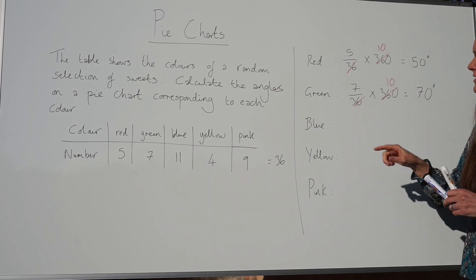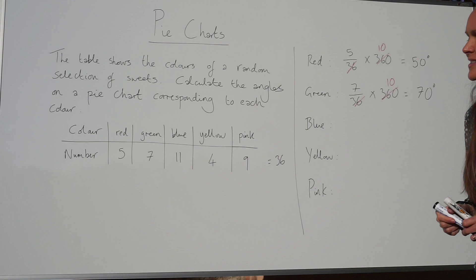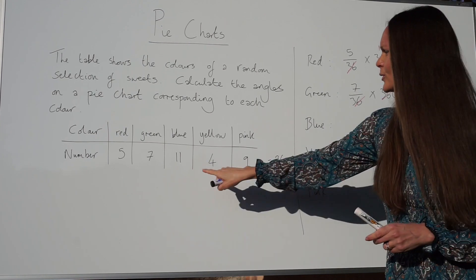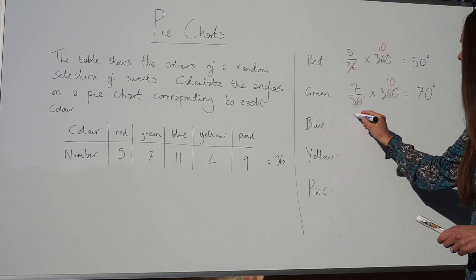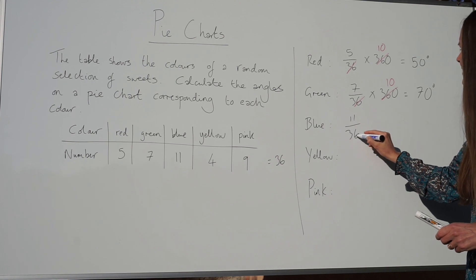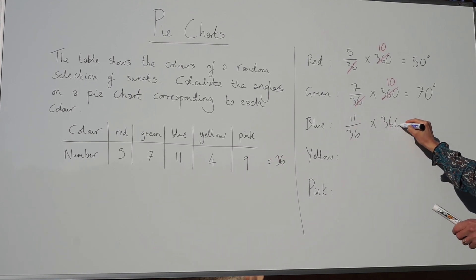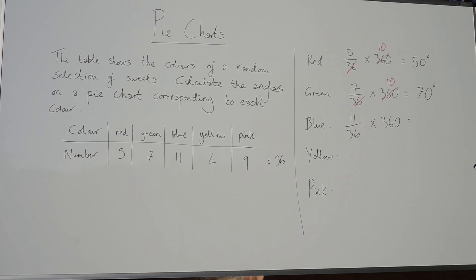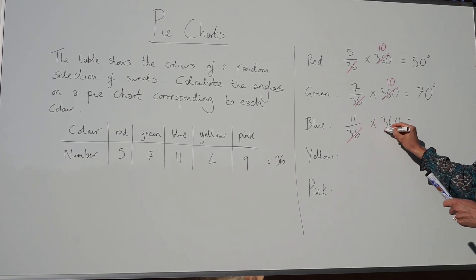Next, onto blue. So we've got 11 sweets out of 36, and again times by 360. Hopefully it's becoming a little bit easy now—it's quite repetitive once you've got the hang of it. And 11 multiplied by 10 is 110.